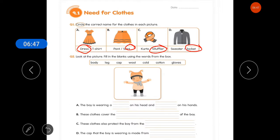Now, it's time for the second question. Look at the picture, fill in the blanks using the words from the books. The boy is wearing a dash on his head. What is on his head? Boy has cap. So, we will write here cap. Next. And dash on his hands. What is the boy wearing on his hands? Gloves. So, we will write here gloves.